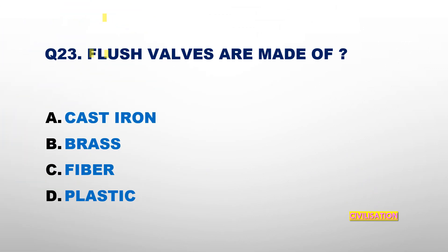Question number 23: Flush walls are made of — Cast Iron, Brass, Fiber, or Plastic? The answer is Brass.